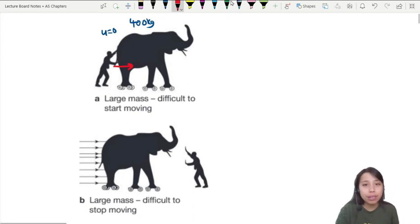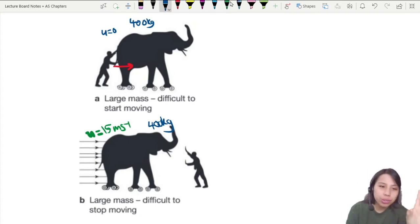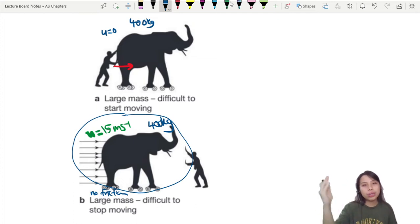But if the elephant is already moving at a super fast speed, maybe moving at 15 meters per second, which is really fast, and then the poor man says stop, stop moving, it's going to be very hard for the elephant to stop. Because 400 kg. So much inertia, it cannot stop.